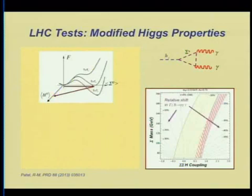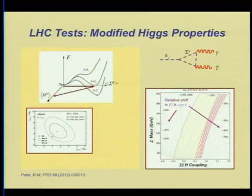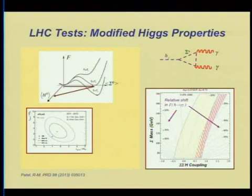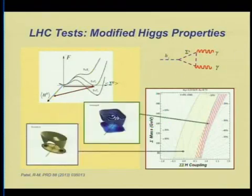Right now the Higgs two-photon decay rate is at least consistent with the data, but there's a lot of uncertainty and some tension between ATLAS and CMS. That leaves a fair amount of room for a shift associated with these new states to be seen in the future.